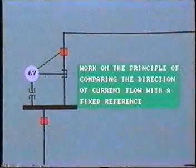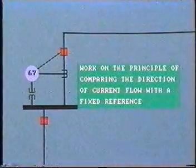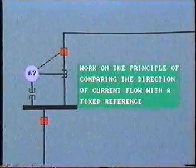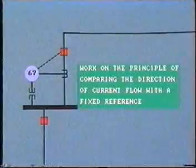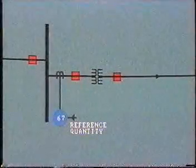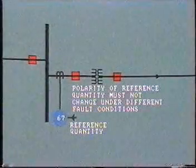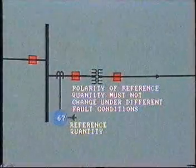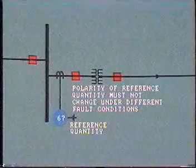There are several different types of directional relay, but they all work on the principle of comparing the direction of current flow with some fixed reference, which may be voltage or current. To be more precise, it is usual to compare the phase angle of the current in relation to that of the reference. The important point is that the polarity of the reference quantity, be it voltage or current, must not change even under different fault conditions.